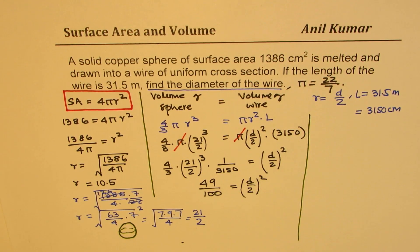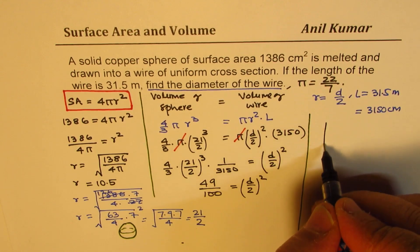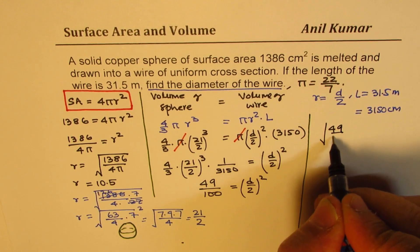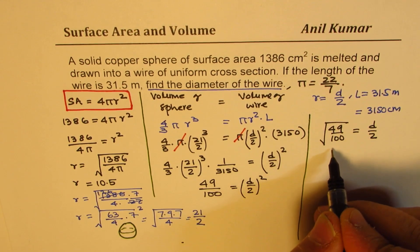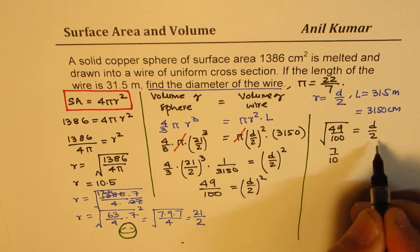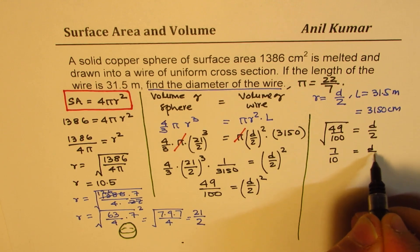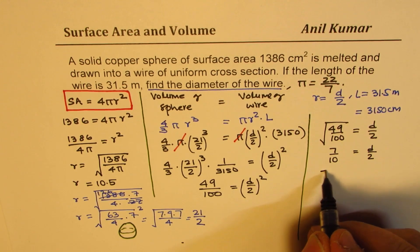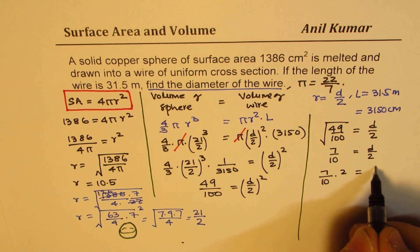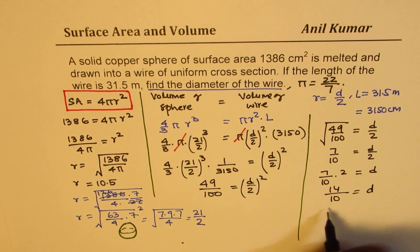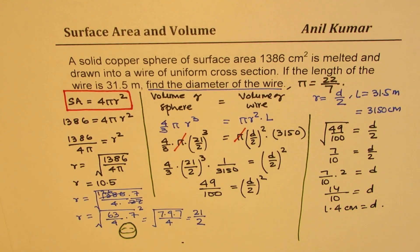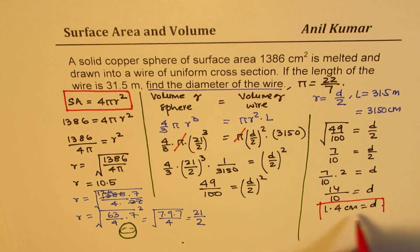Taking the square root: √(49/100) = d/2, which is 7/10. So d = (7/10) × 2 = 14/10 = 1.4 centimeters is the diameter.